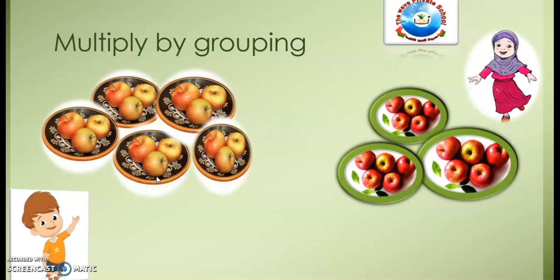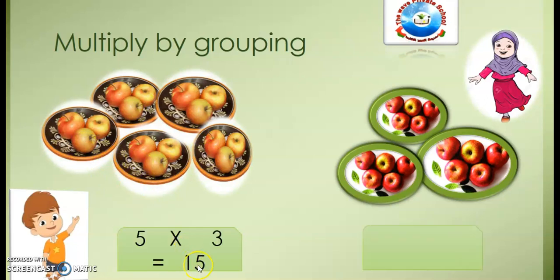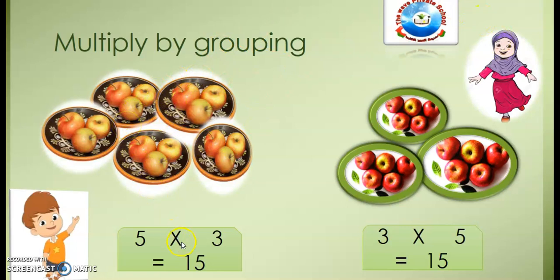Let's calculate: the boy has 5 plates with 3 apples each, so 5 times 3 equals 15 apples. The girl has 3 plates with 5 apples each, so 3 times 5 also equals 15 apples. They have the same amount! The boy has more plates but fewer apples per plate, and the girl has fewer plates but more apples per plate. By using multiplication we can see there is no difference — they both have 15 apples.